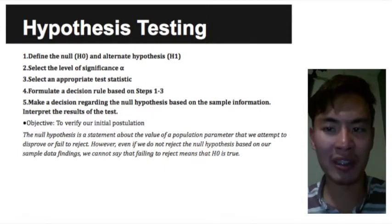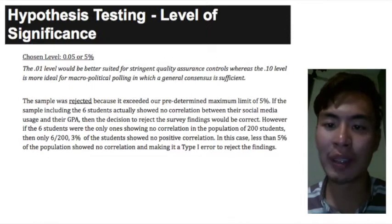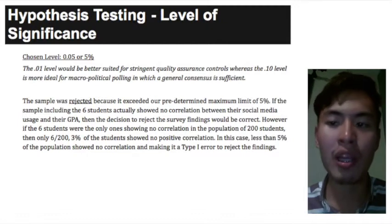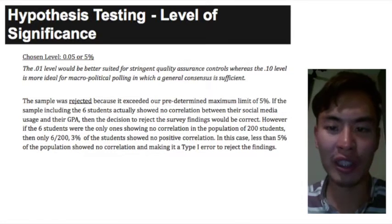We have established that the null hypothesis is that the mean number of hours spent on social media will not be more than four hours daily. Step two involves stating the level of significance alpha, which refers to the probability of rejecting the null hypothesis when it is true. We decided to go with a 0.05 level as it better reflects the research nature of our project.